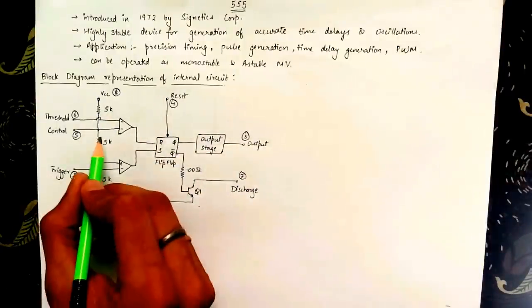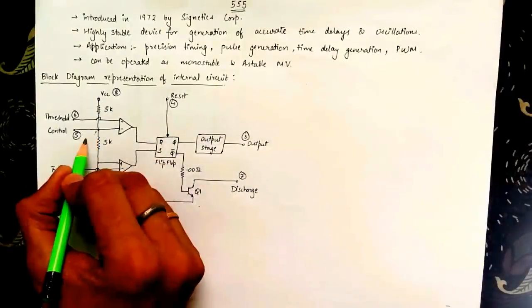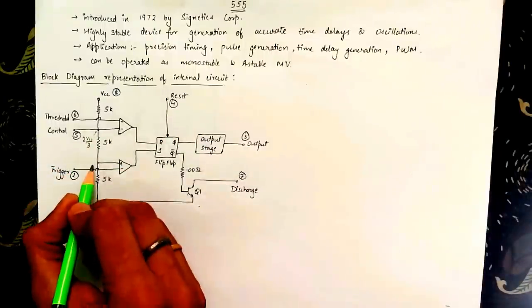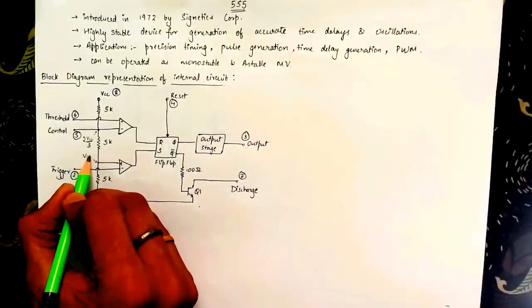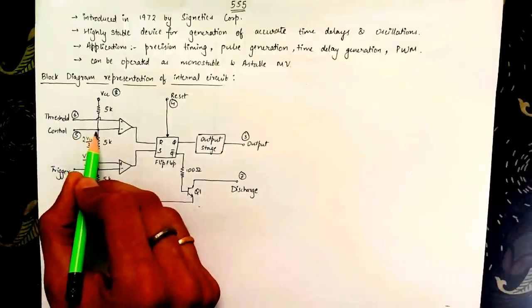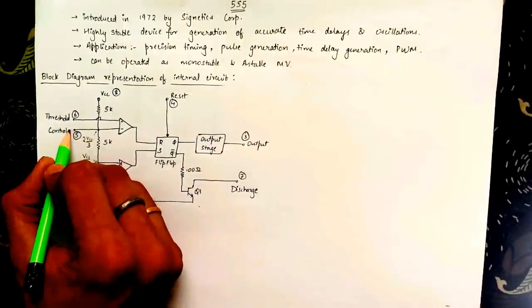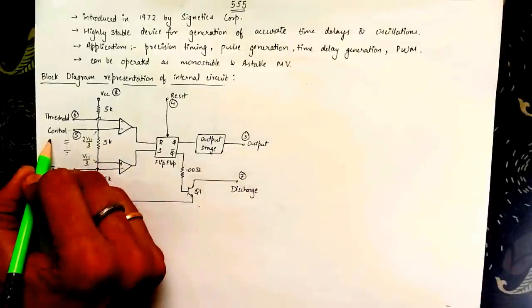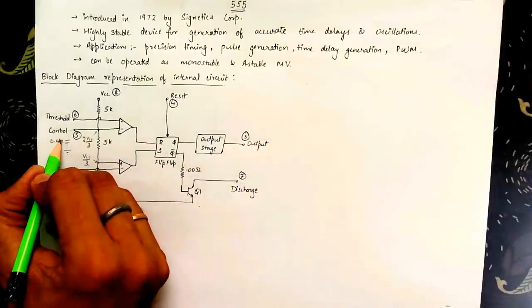The three resistors form a voltage divider and are used to set the reference voltages for the two comparators. 2Vcc by 3 is set as the reference voltage for the first comparator and Vcc by 3 for the second comparator. Control pin can also be used to externally set the reference voltage for comparator 1 but it is generally not used so we short it to the ground using a 0.01 microfarad capacitor.